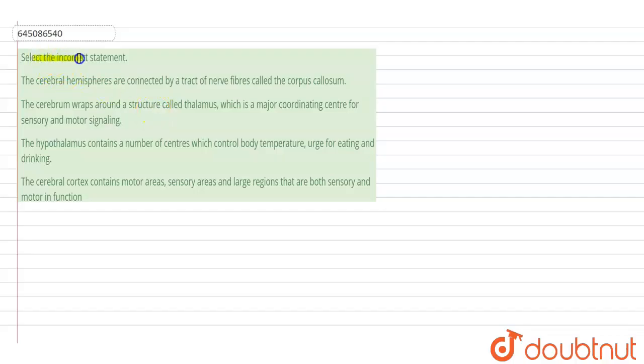Hello students, the question here says select the incorrect statement. So the first statement is that the cerebral hemispheres are connected by tract of nerve fibers which are called as corpus callosum.